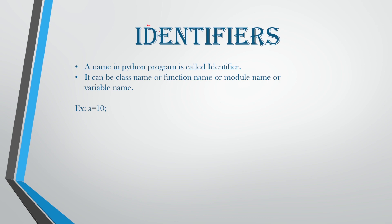For example, you can see here: a is equal to 10, wherein 'a' is a variable and this variable name is itself known as an identifier. So now we are going to call it as an identifier.